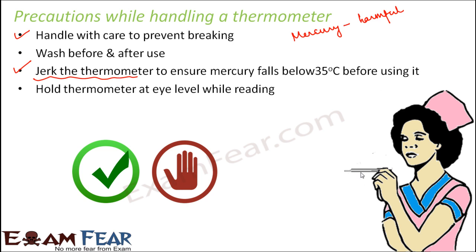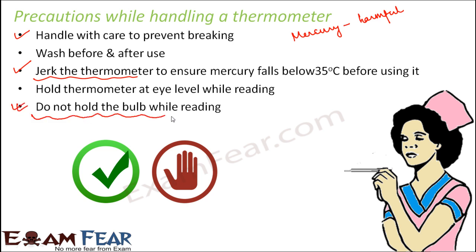Always hold the thermometer at eye level while reading, because holding it above or below eye level may give an incorrect reading — it should be held parallel to your eye level. Do not hold the bulb while reading. This is very important because the bulb contains mercury; if you hold it, your hand's temperature can alter the bulb's temperature, causing the mercury level to change and giving an inaccurate reading.